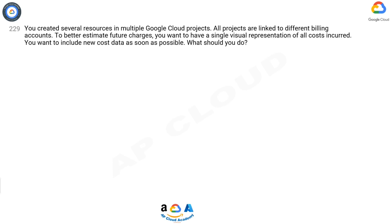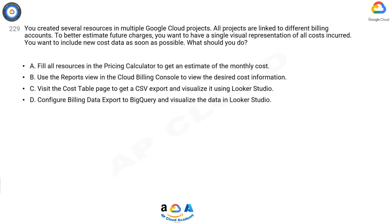Question 229. You created several resources in multiple Google Cloud projects. All projects are linked to different billing accounts. To better estimate future charges, you want to have a single visual representation of all costs incurred. You want to include new cost data as soon as possible. What should you do? A: Fill all resources in the pricing calculator to get an estimate of the monthly cost. B: Use the reports view in the Cloud Billing console to view the desired cost information. C: Visit the cost table page to get a CSV export and visualize it using Looker Studio.